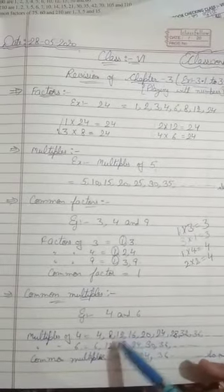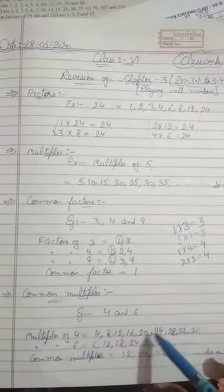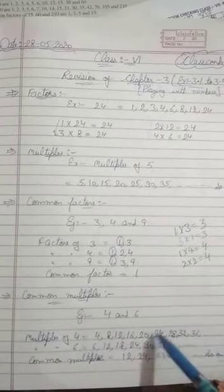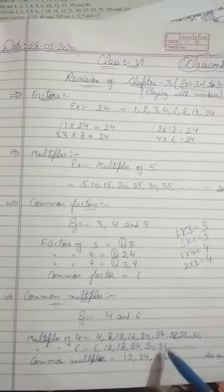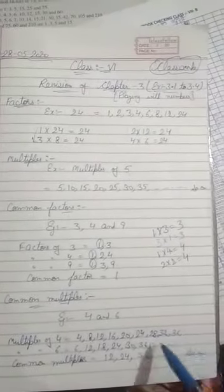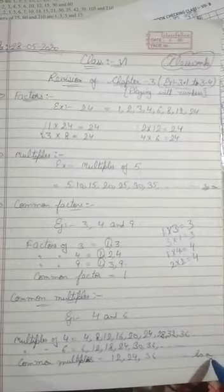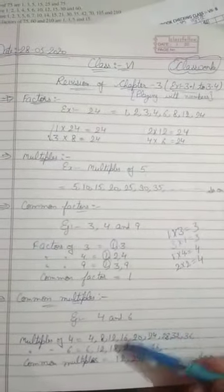So common multiples are - just check out which is common. 12 is common in both, write down. 24 is common in both, write down. 36 is common in both, write down, and so on. This dash represents that more numbers can be common multiples between these two.